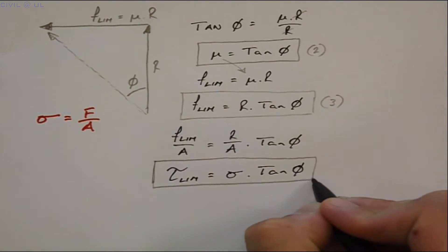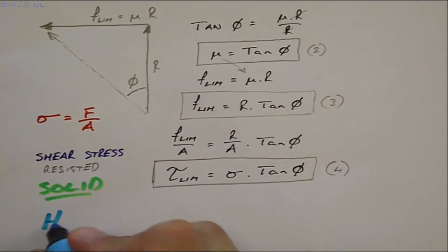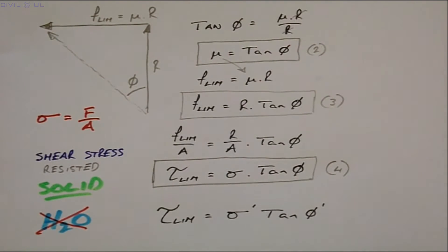And one more thing, as shear stress in soils can only be resisted by the skeleton of the solid particles and not the pore water, the shear strength of soil is normally expressed as a function of the effective normal stress rather than the total stress. So equation 4 can be rewritten as the limiting or shear stress at failure is equal to the normal effective stress times the tan of the effective angle of friction.